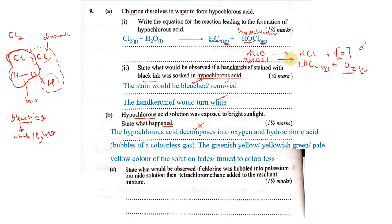To decompose basically means to break down. It is unstable — if something is unstable, it will break or decompose. So hypochlorous acid decomposes into oxygen and hydrochloric acid. The hydrogen chloride gas would dissolve due to the presence of water to form hydrochloric acid. So it forms oxygen and hydrochloric acid.